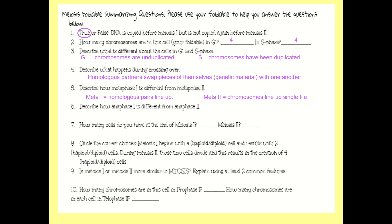If we look at anaphase 1 and anaphase 2, in anaphase 1 we have the homologous partners separating from one another, but in anaphase 2 it is the sister chromatids that are being pulled apart. That's the big distinction to know there.